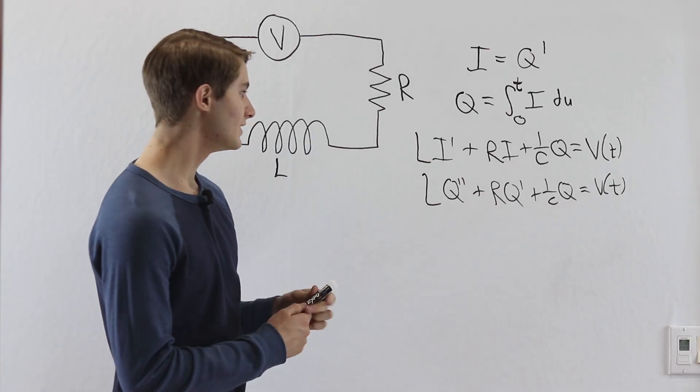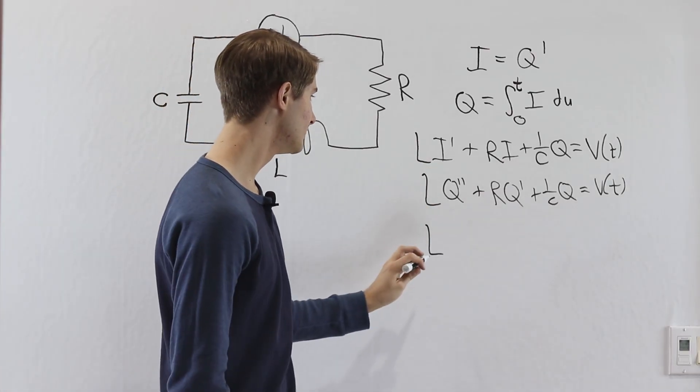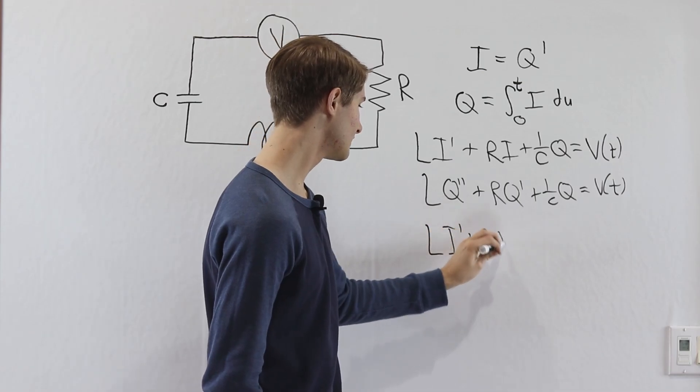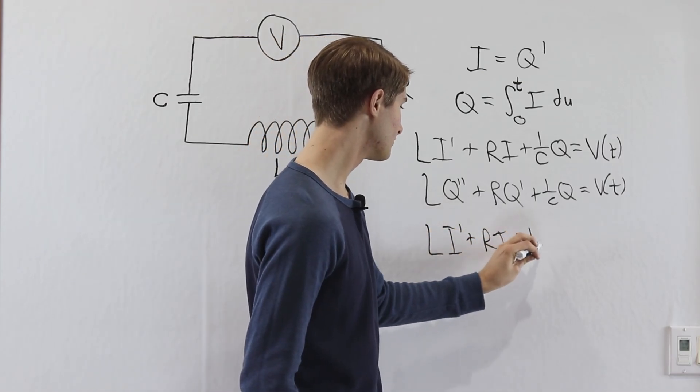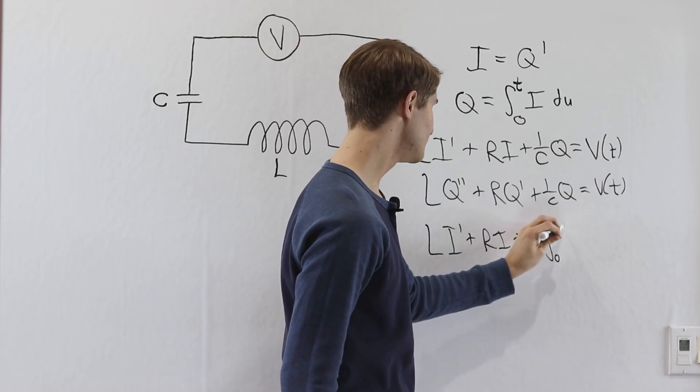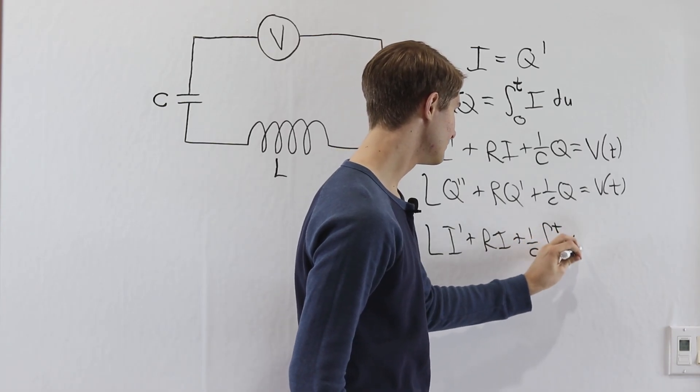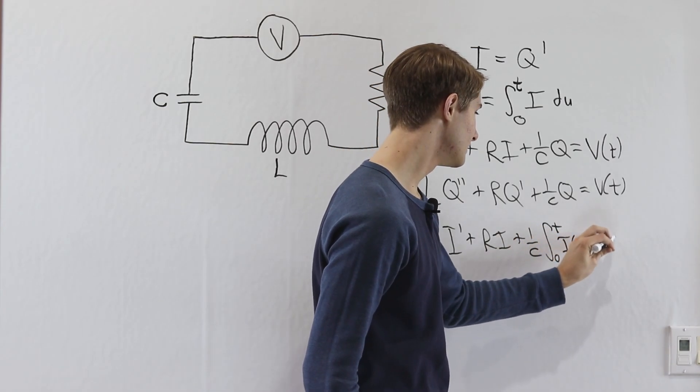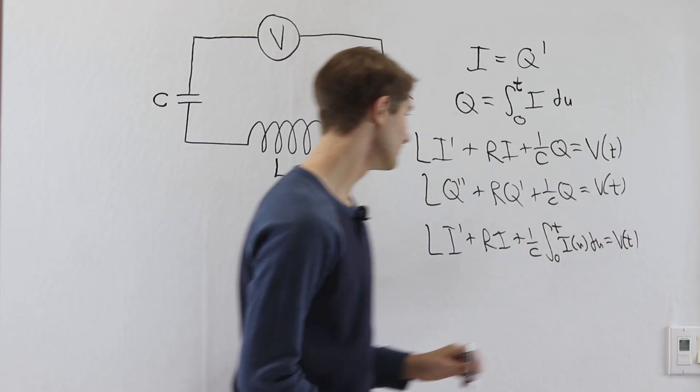So we can also write this as L times I prime plus R times I plus 1 over C, and then we write Q as the integral from 0 to T of I of u du, and this equals V of T as well.